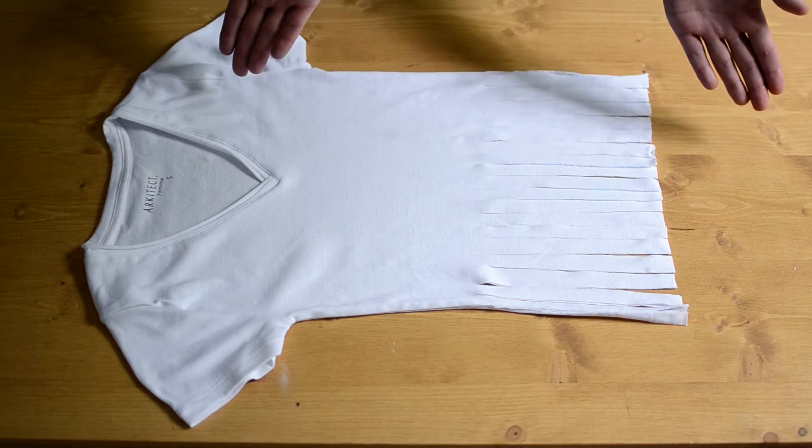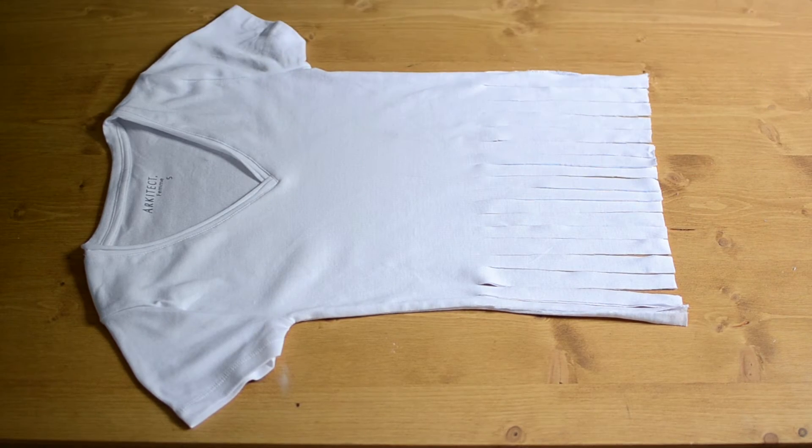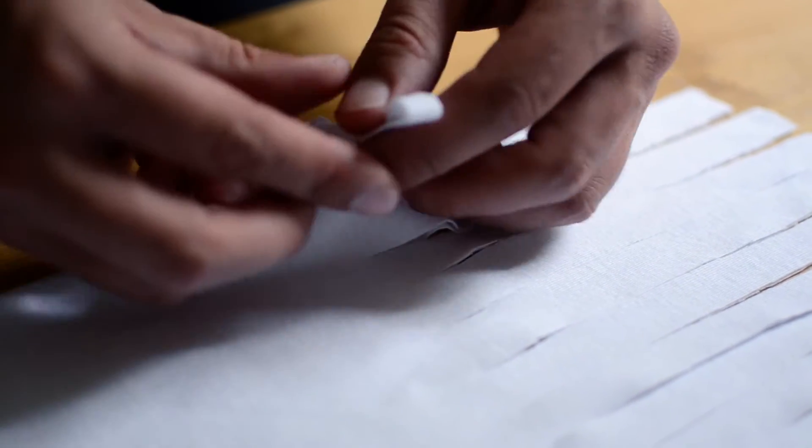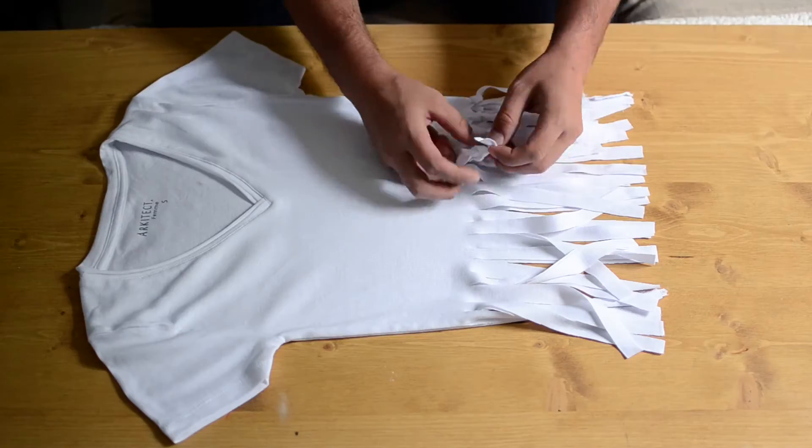Et voilà on pourrait s'arrêter là mais nous on a décidé de faire des petits nœuds parce que c'est beaucoup plus mignon. Il suffit de faire un petit nœud à la base de chaque frange, de serrer un petit peu. C'est un petit peu long mais on vous l'a dit c'est vraiment mignon.